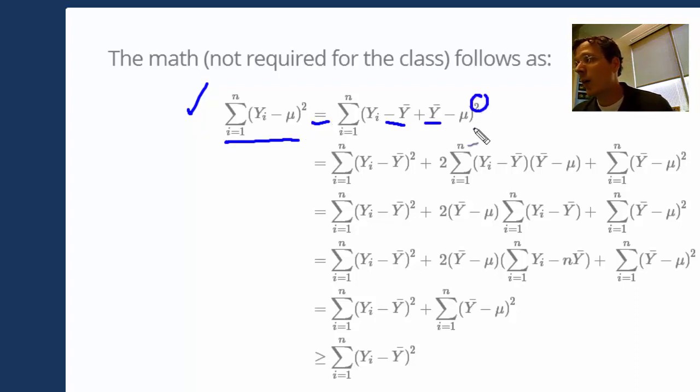I can expand this square out, and I get this term, twice the cross product term, and then this term right here. Let's look at this term right here.